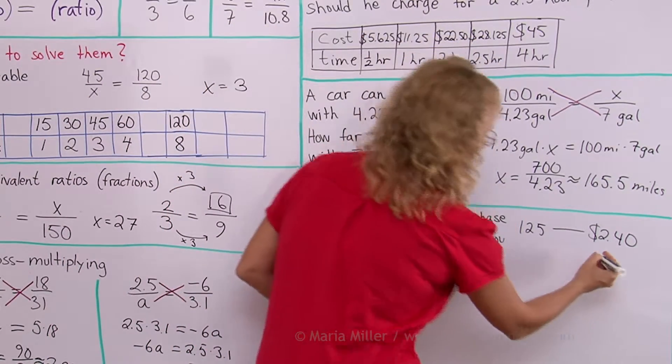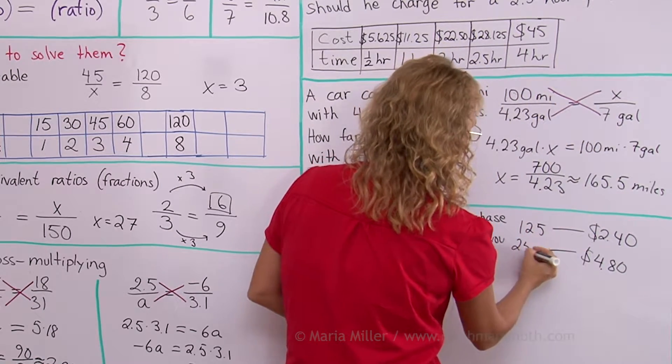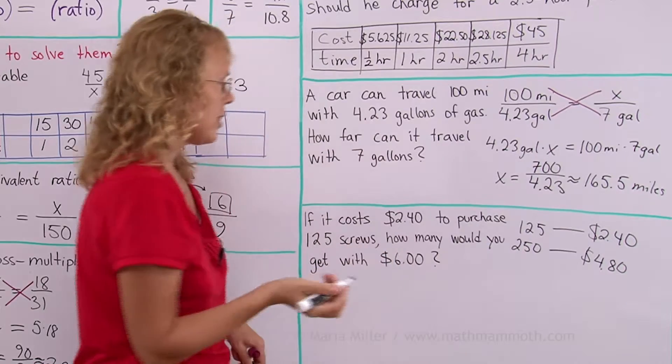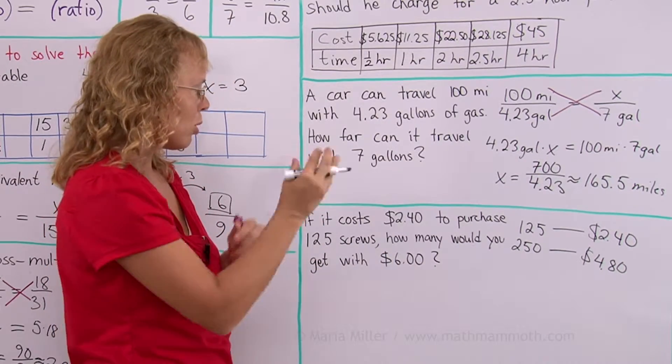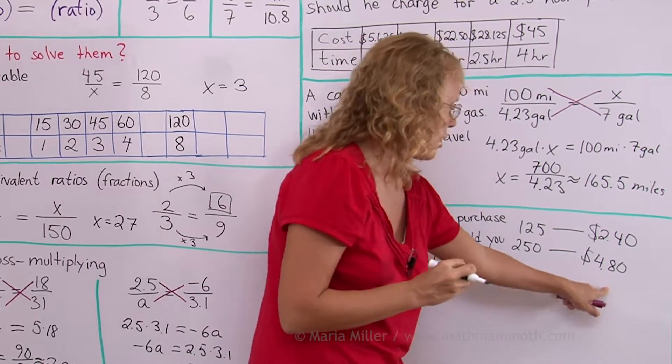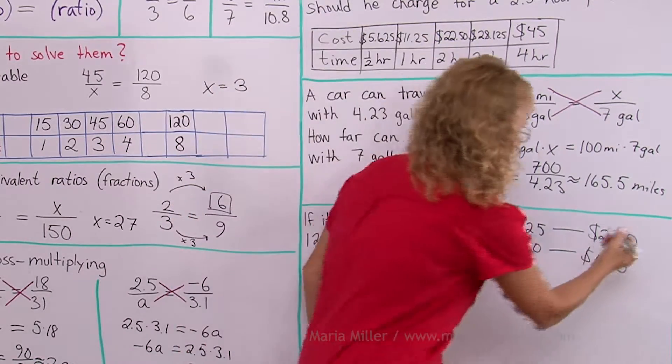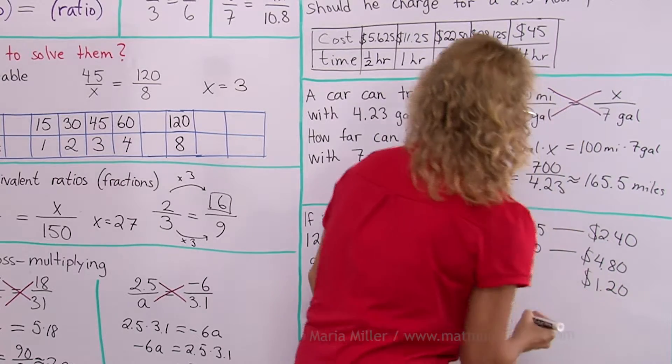And then how many would you get with $6? Well let's see, I first double this. That would be 250 screws for $4.80. But of course that's not $6. I need some smaller amount. If I add $1.20 to this then I would get $6 right? And that happens to be half of my original amount. So that will work beautifully.